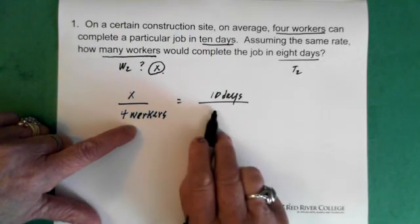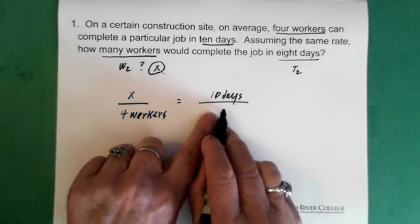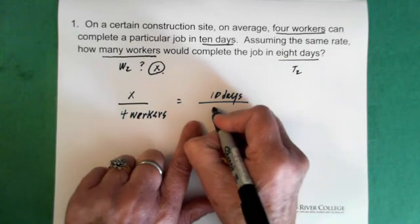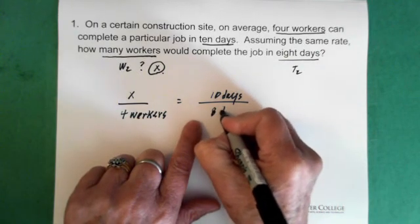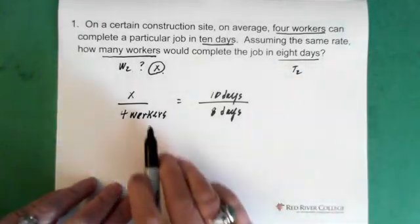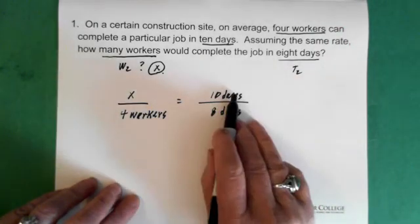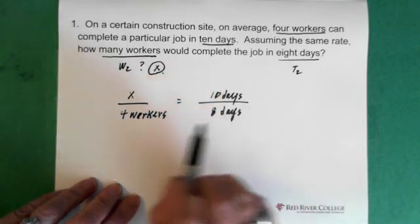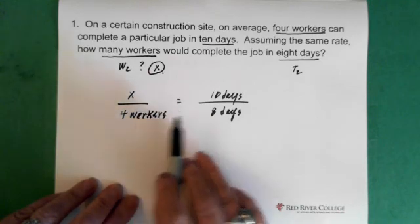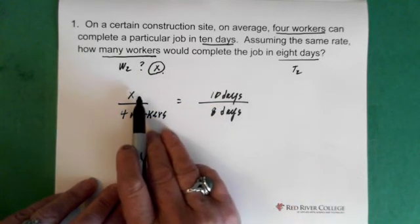And the x is connected with the number of days of the unknown, okay? The unknown. So the 8 days goes down here. So again, these 4 workers, inverse relationship, but they're connected with the 10 days. And the x is connected with the 8 days. And notice here, it's workers over workers, days over days. Now all we have to do is solve for x.